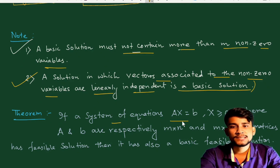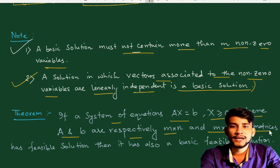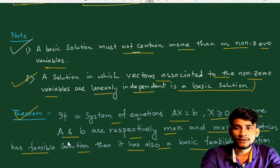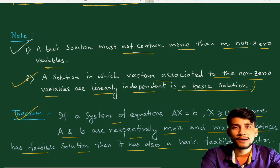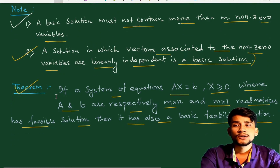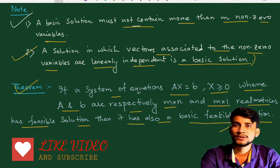An important theorem: if the system Ax = b with x ≥ 0, where A and b are respectively m×n and m×1 real matrices, has a feasible solution, then it also has a basic feasible solution. This ensures that feasibility implies the existence of a basic feasible solution. The key terms covered — feasible solution, infeasible solution, basic solution, non-basic solution, basic feasible solution, degenerate and non-degenerate solutions — are all very important for LPP. We will continue in the next lecture.